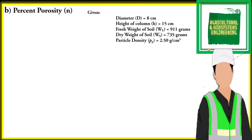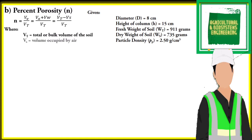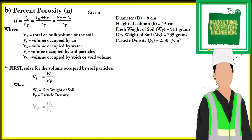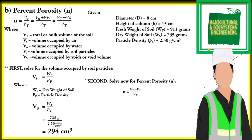The next value that we are going to solve is the percent porosity. To solve for porosity we can use the appropriate formula. First, we solve for the volume occupied by the soil particles using this formula, substituting the values. The answer is 294 cubic centimeters. Now we solve for the percent porosity by substituting the values, and the final value for percent porosity is 61 percent.